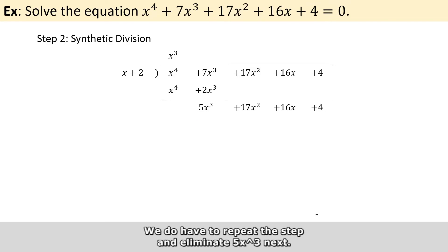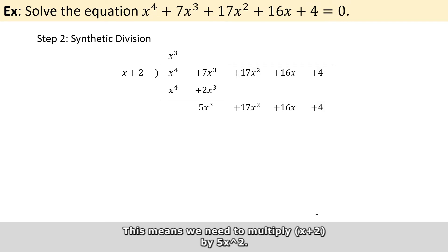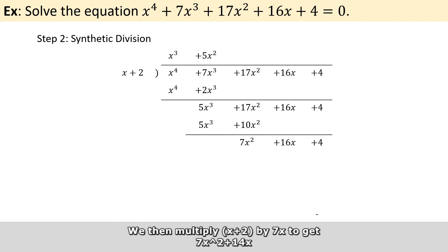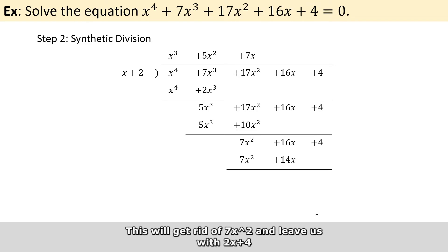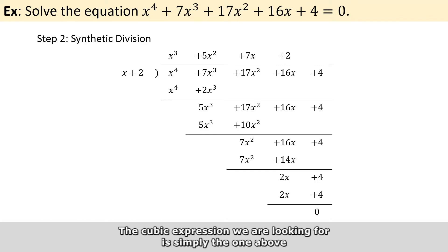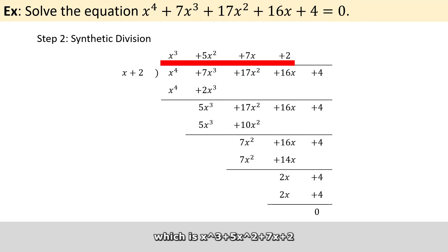We then have to repeat this step and eliminate 5 times x to the power of 3 next. This means that we need to multiply x plus 2 by 5 times x squared. Once again, we perform the subtraction and the remainder is a quadratic expression. We then multiply x plus 2 by 7x to get 7x squared plus 14x. This will get rid of 7 times x squared and leave us with 2x plus 4. Finally, multiplying x plus 2 by 2 would return 0 after this subtraction. So the cubic expression we are looking for is x cubed plus 5x squared plus 7x plus 2.